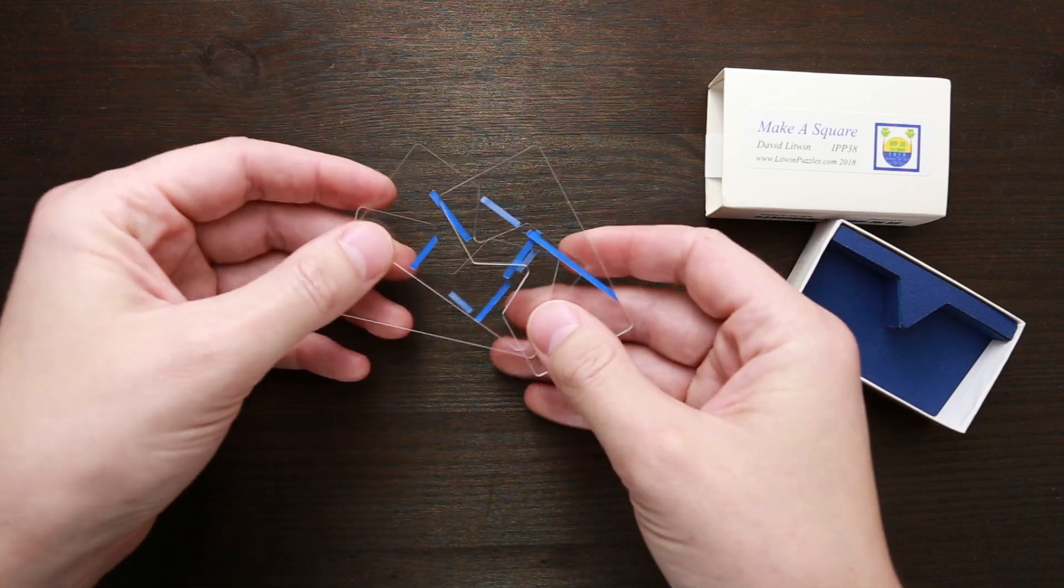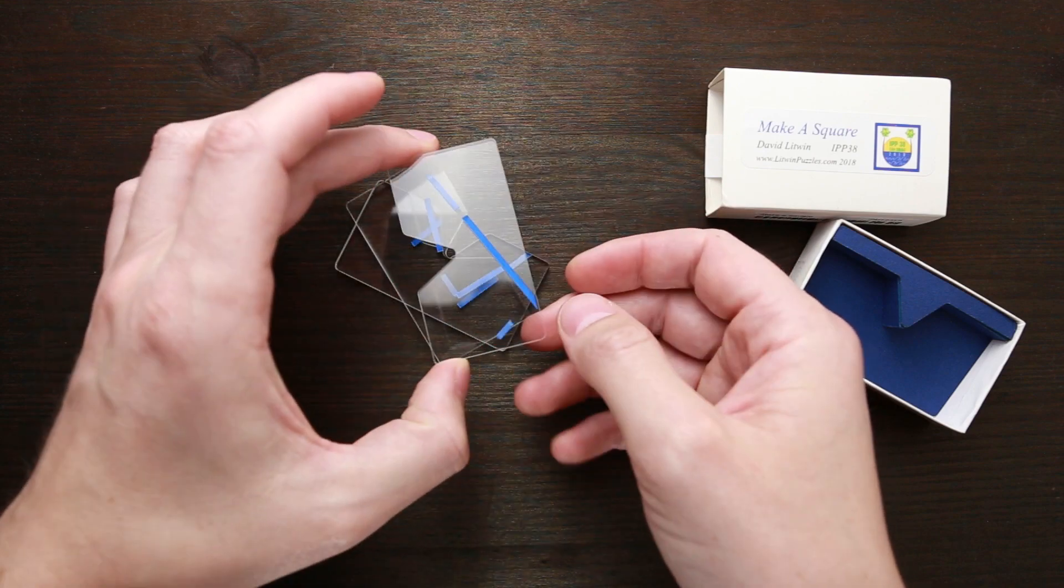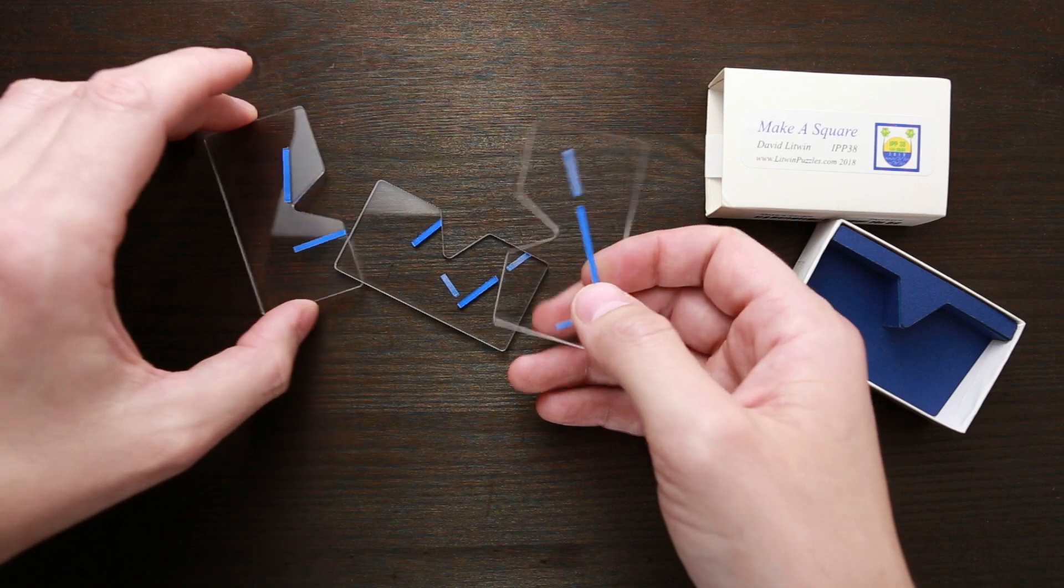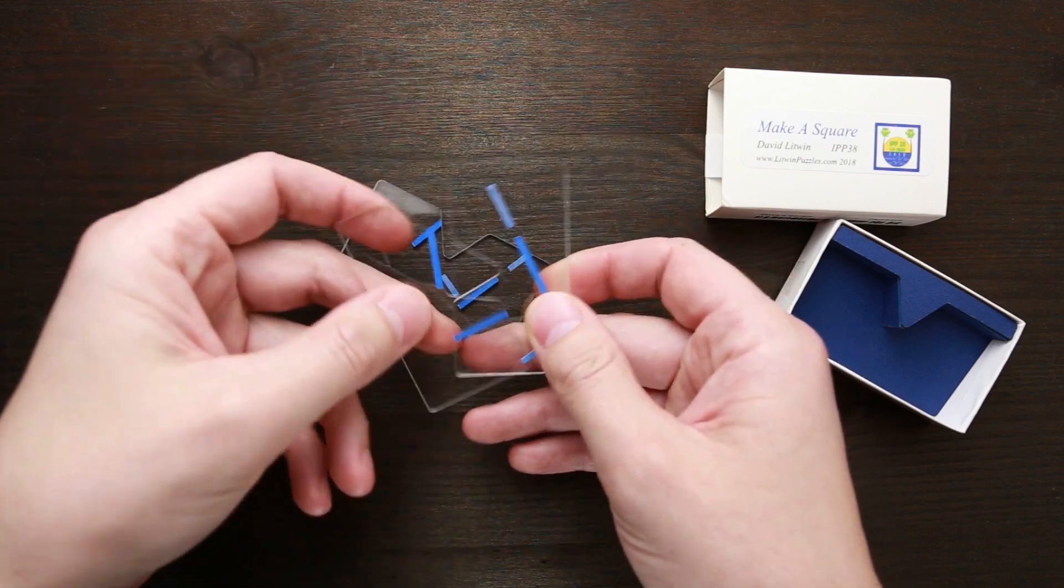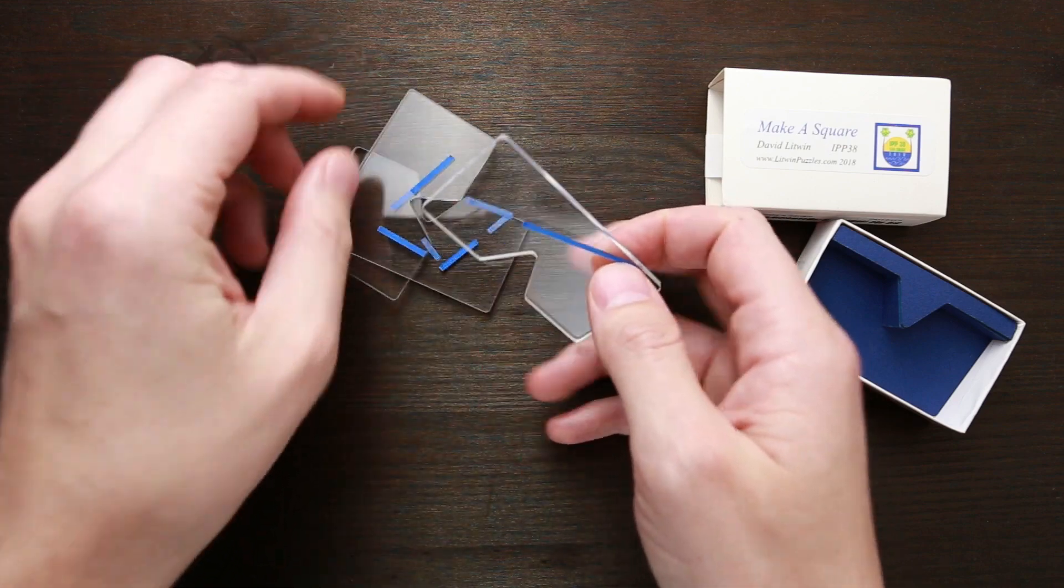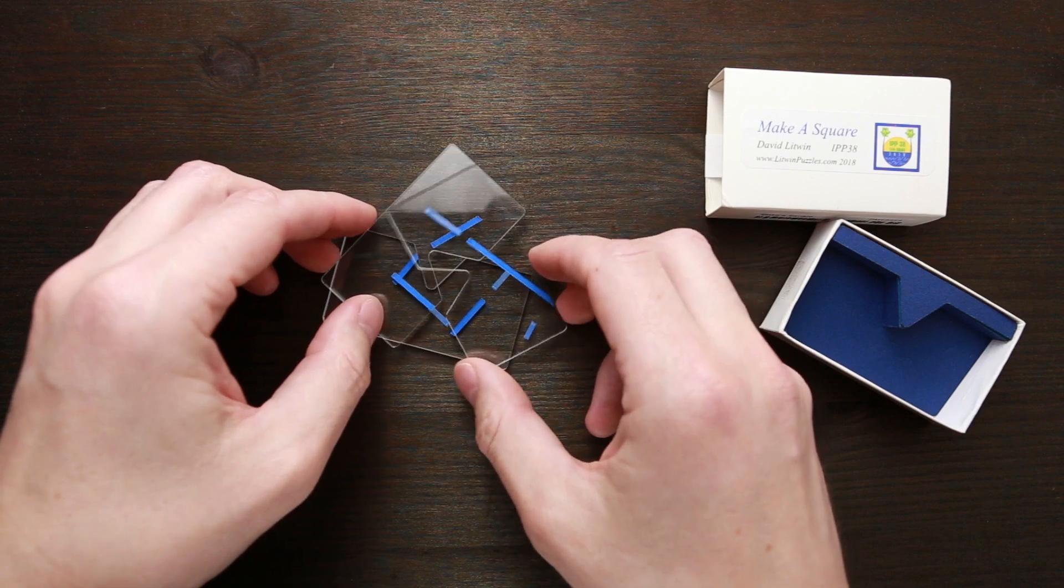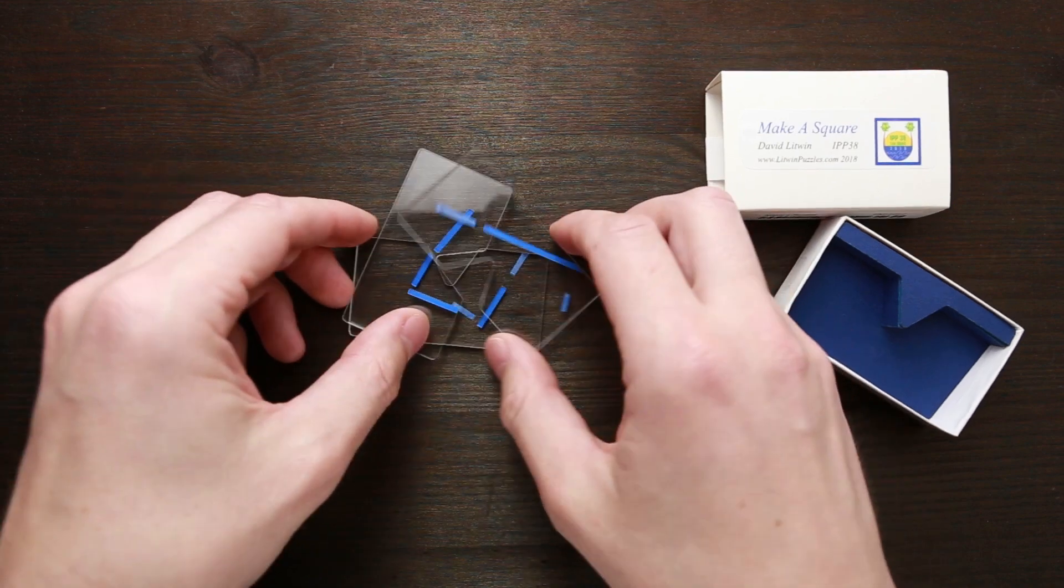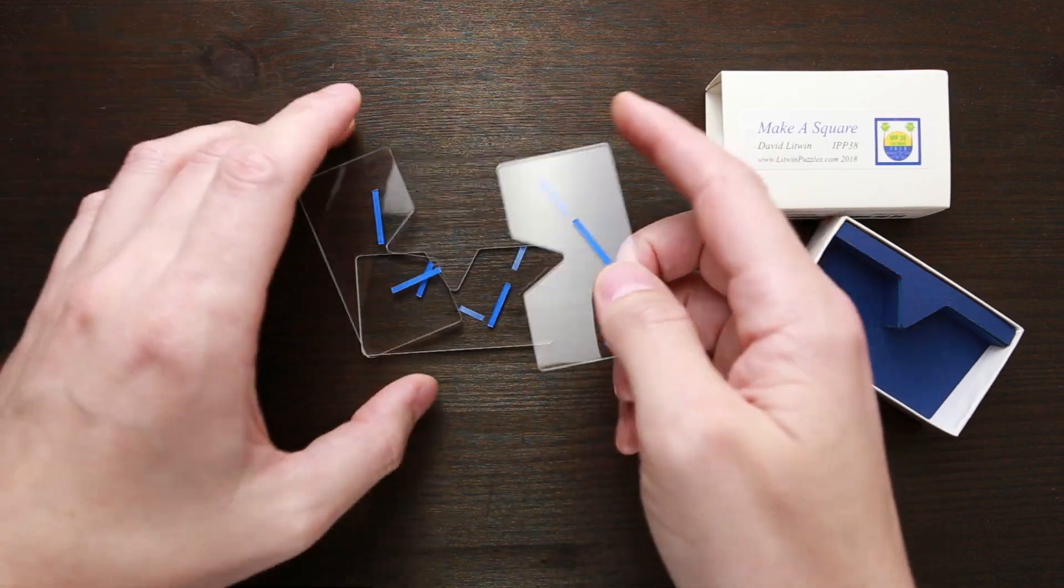And at first glance, it seems impossible to do, since on this part, for example, these lines are much longer than lines on other sides. And if you try to make some kind of a square, it seems impossible, but there is a trick how to do it.